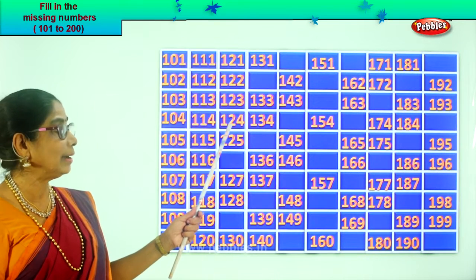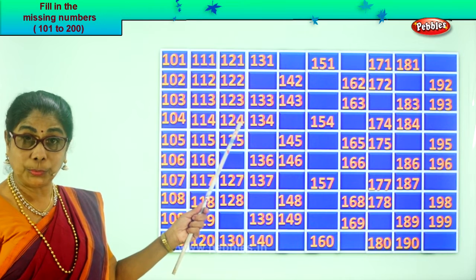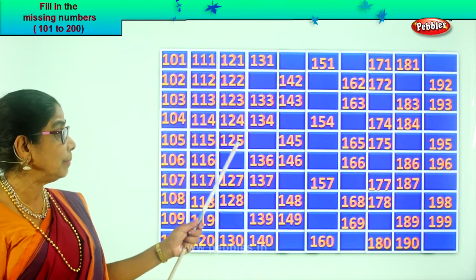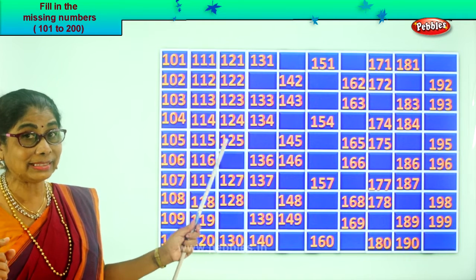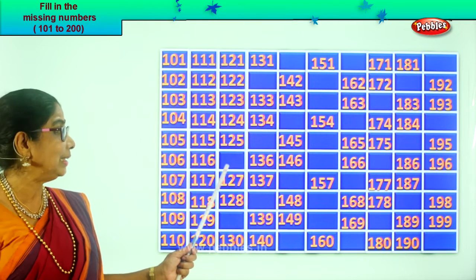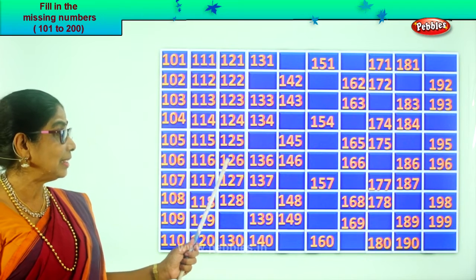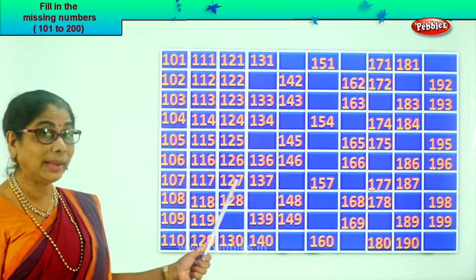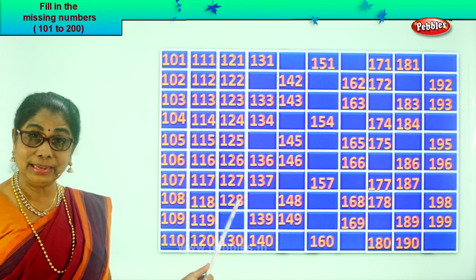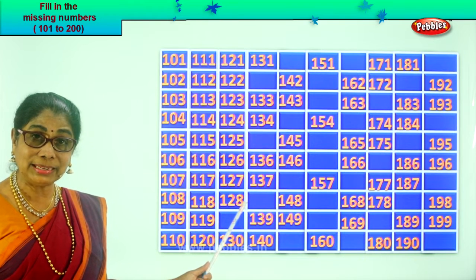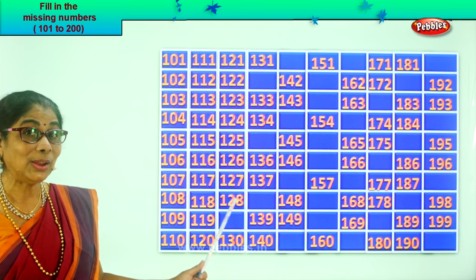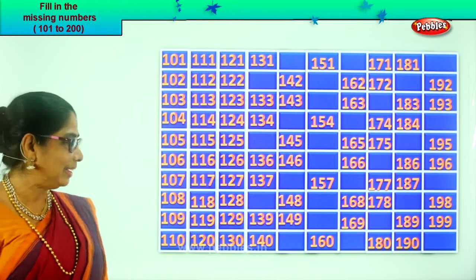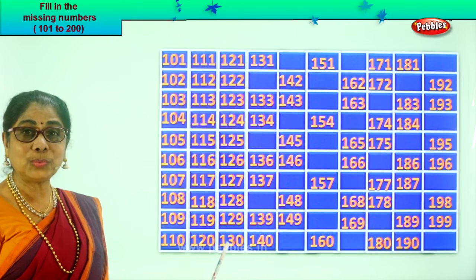Read on: 124, good. 125. Now we have 5 as the last number. What will be next after 5? 6. After 25, 26 — that's very good. So we write it as 126. Next: 127, 128. We have 8 here, what will be the next number? 9. After 28, 29. So we write it as 129. And then comes 130.